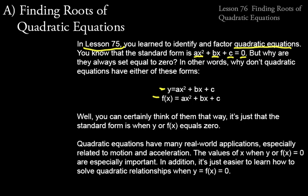Well, you can think of them that way. It's just that the standard form is when Y or F of X equals zero. You know that these are parabolas — you can graph them on an XY axis and they'll have a parabolic shape. The reason we set them equal to zero is because quadratic equations have many real-world applications, especially related to motion and acceleration in particular. The values of X when Y or F of X equals zero are especially important.